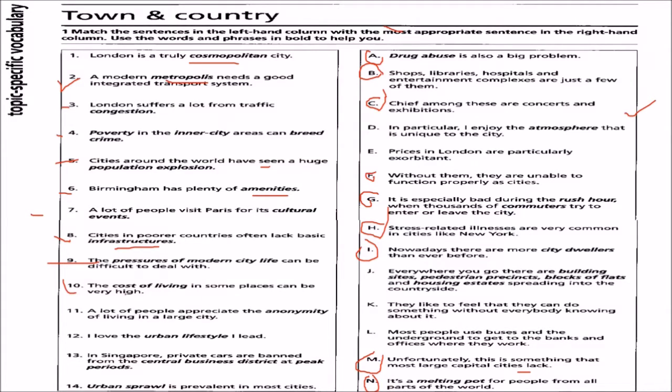Ten: the cost of living in some places can be very high. We match it with E — prices in London are particularly exorbitant. The cost of living: exorbitant.